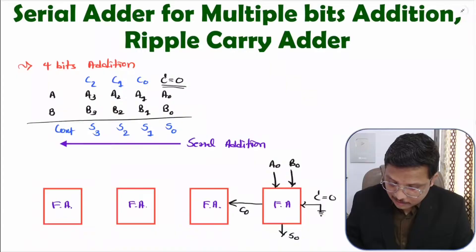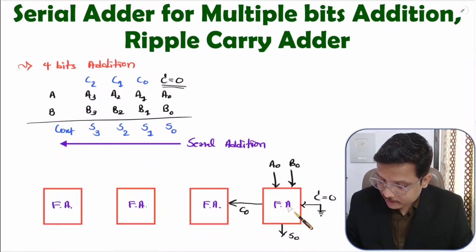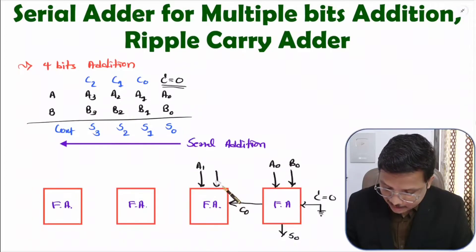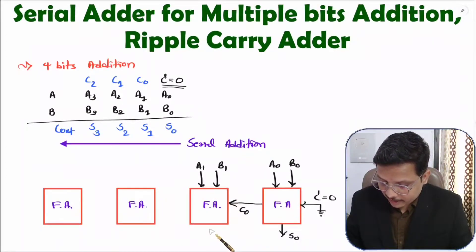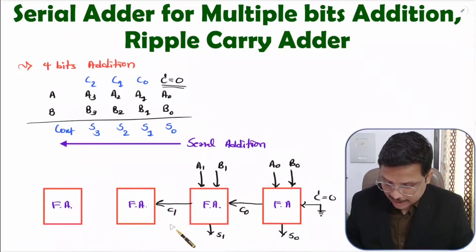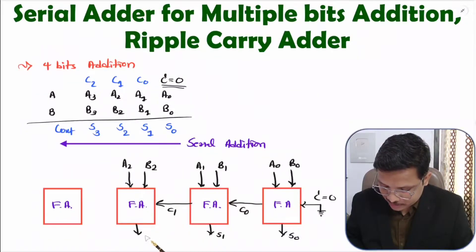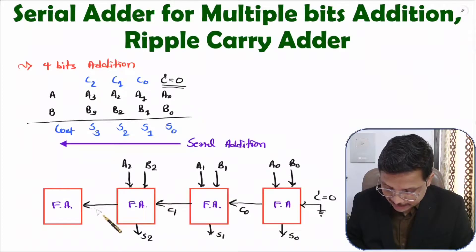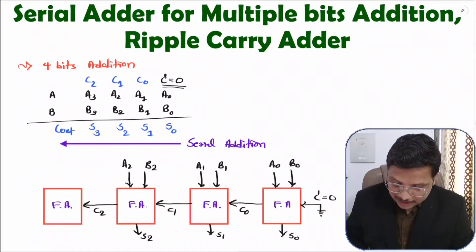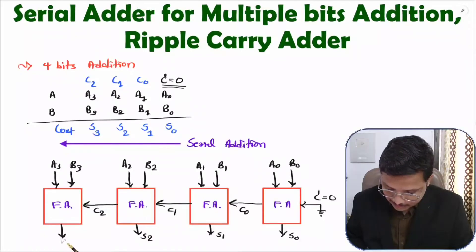With this second full adder, we are adding A1, B1, and C0. C0 is generated by the first full adder and given as input here, along with A1 and B1. It generates sum S1 and carry C1. With the next full adder, inputs are A2, B2, and C1. Sum is S2 and it generates carry C2, given to the next full adder. The last full adder has inputs A3 and B3, with sum S3 and final carry Cout.